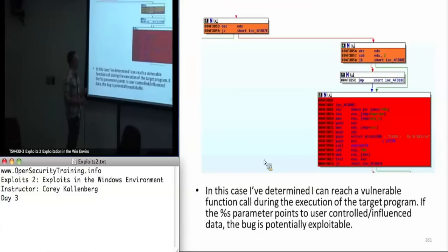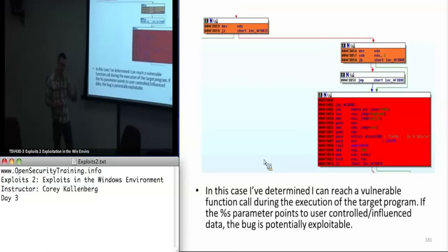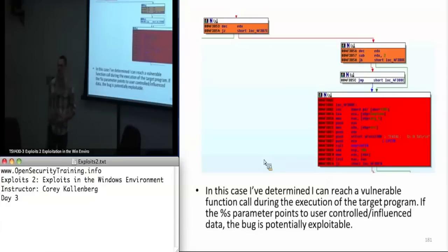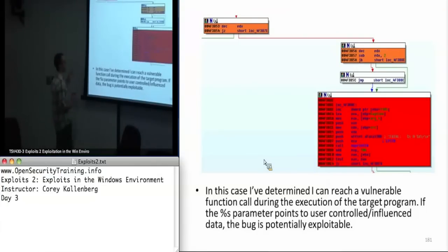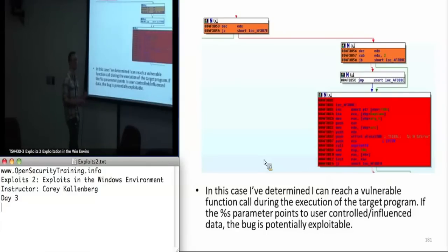You can also do a cross-reference on malloc and similar functions and see if there's arithmetic or multiplication happening before them. If there is, there's a good chance you can cause an integer overflow. As I mentioned in Exploits 1, whenever you're doing arithmetic or multiplication on attacker-controlled integers, the attacker can make those integers arbitrarily large and cause the multiplication to overflow and round back down to a lower value, potentially generating an overflow.